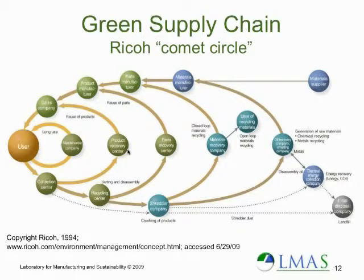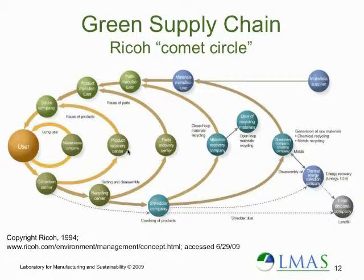The whole idea Ricoh was trying to convey with the Comet Circle is that the more directly you can return the resource from the user back to the user, the better. The first loop is maintenance and return. The second is product recovery, resell, and reuse. The third loop is parts recovery, remanufacture, and reuse. The further loop is materials recovery into parts, then remanufacture and sales. The closer you are to the user, the less energy and resource is used to reuse the product, the more green the process is, and the more sustainable the business model is.